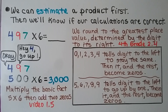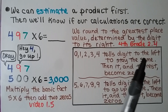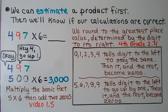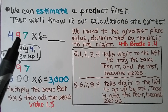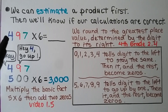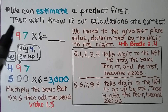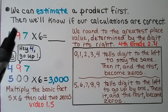We also learned back in fourth grade, video 2.4, how we can round to estimate a product. So we can estimate a product first, then we'll know if our calculations are correct. We round to the greatest place value, and that number we round to is determined by the digit to its right. So the greatest place value here is hundreds.